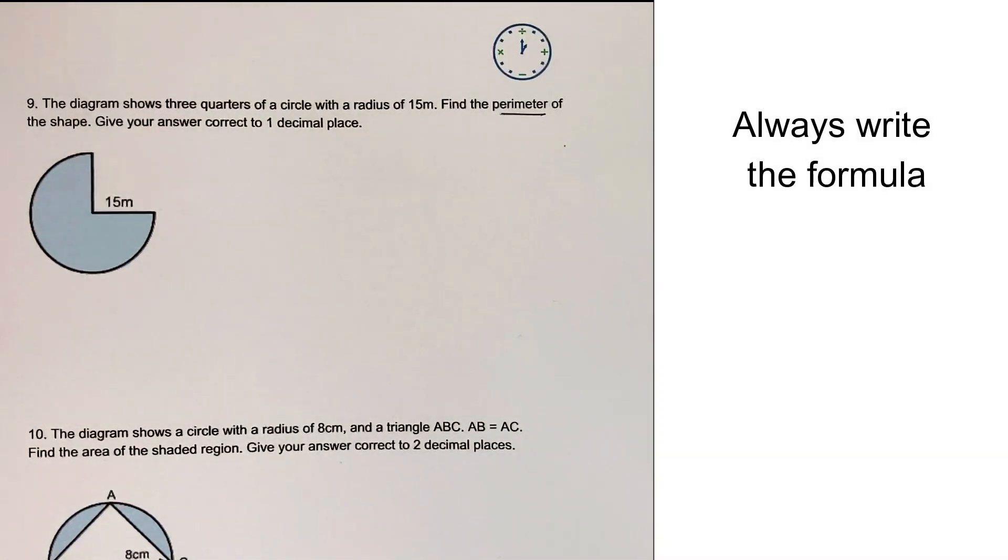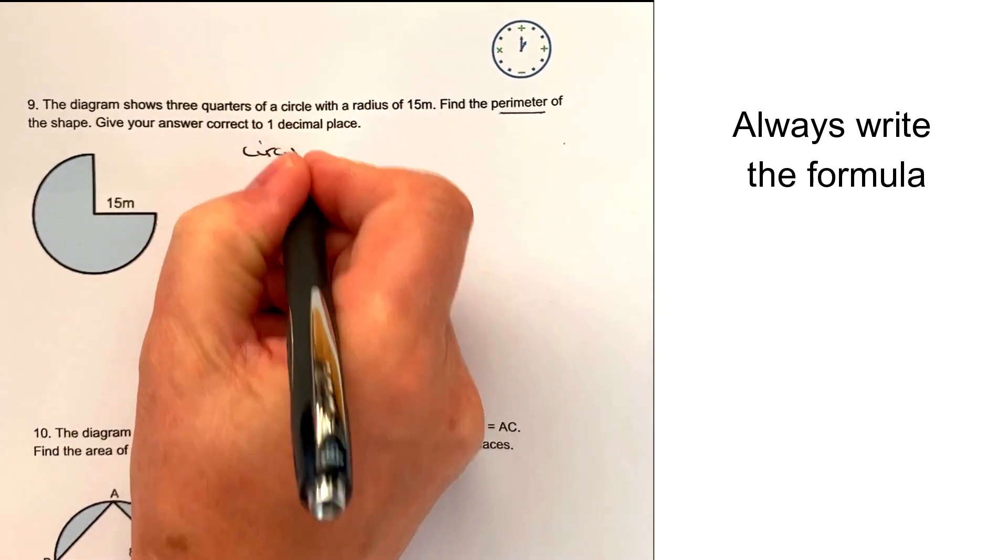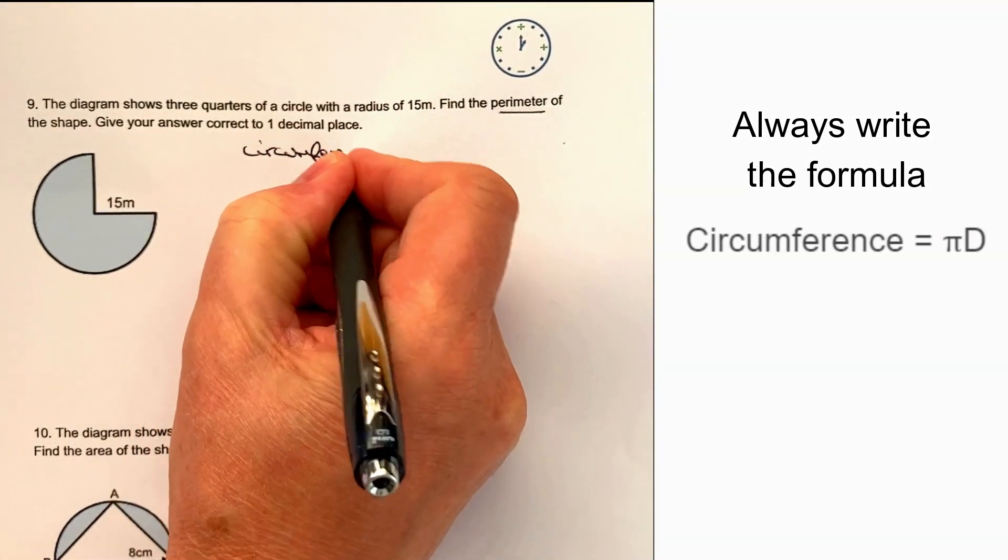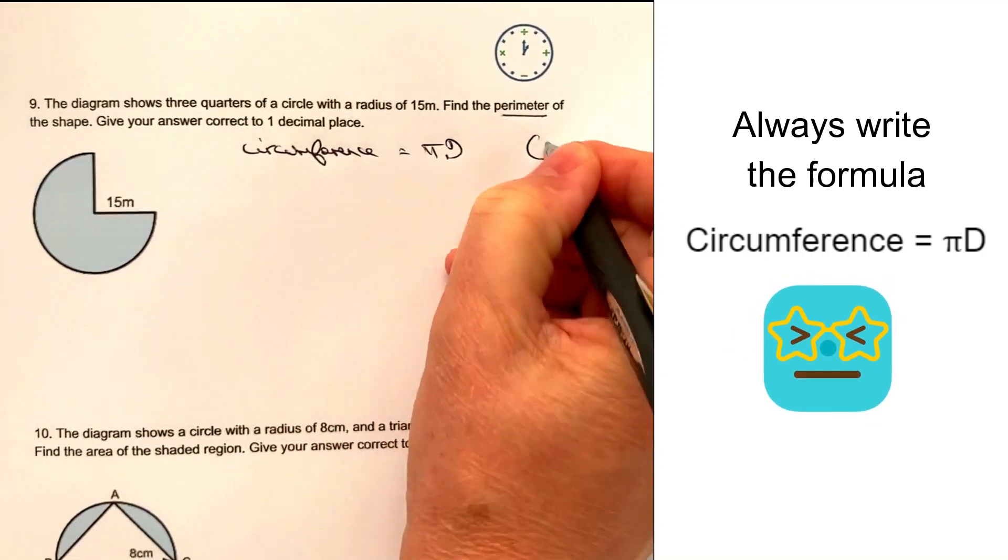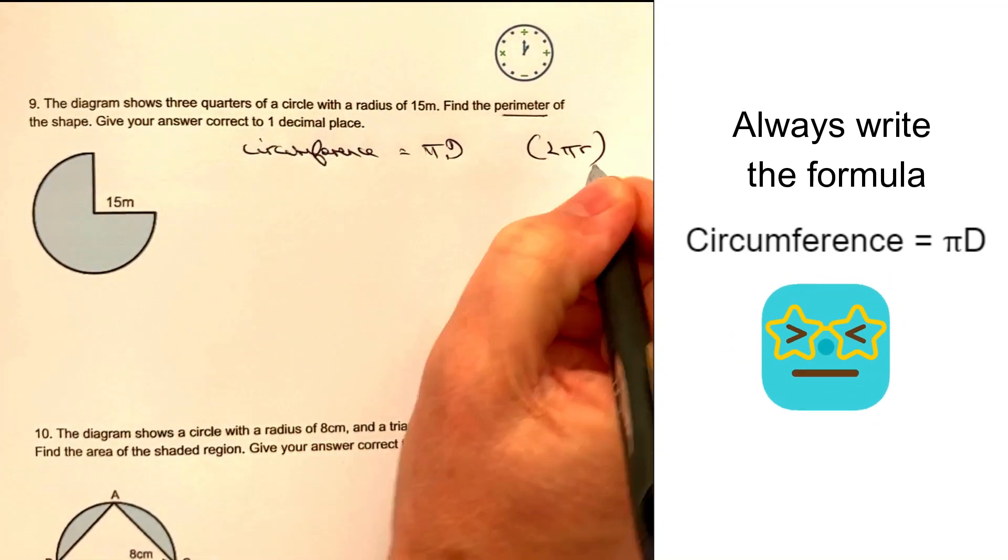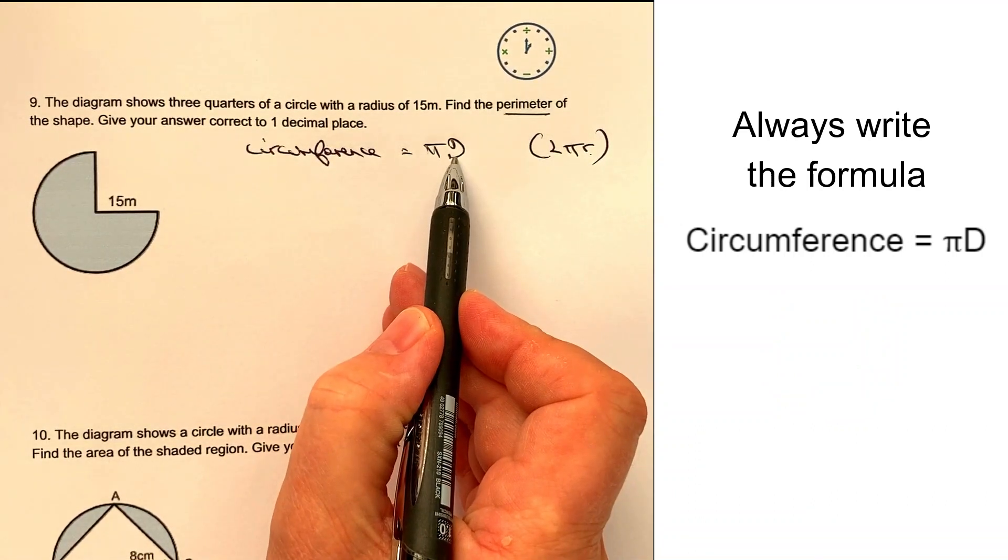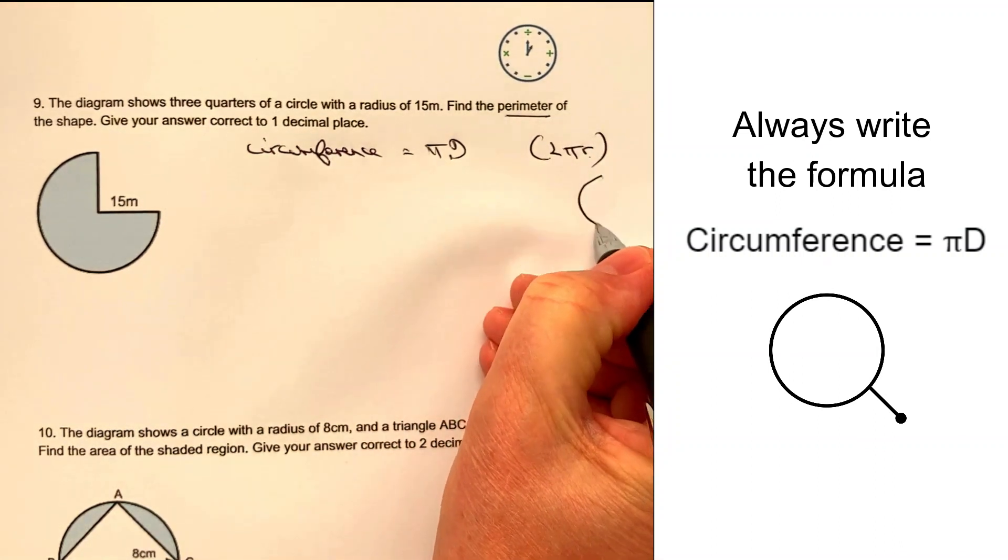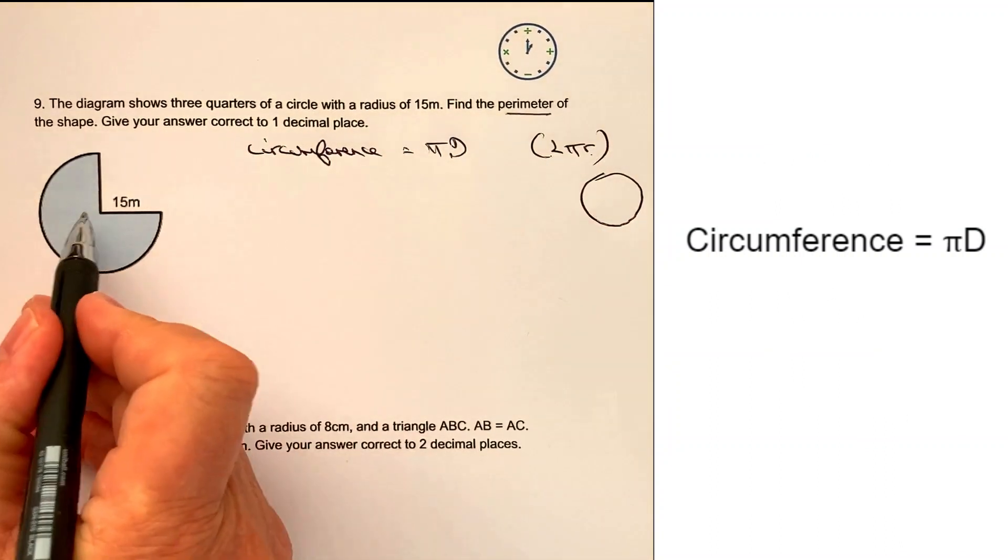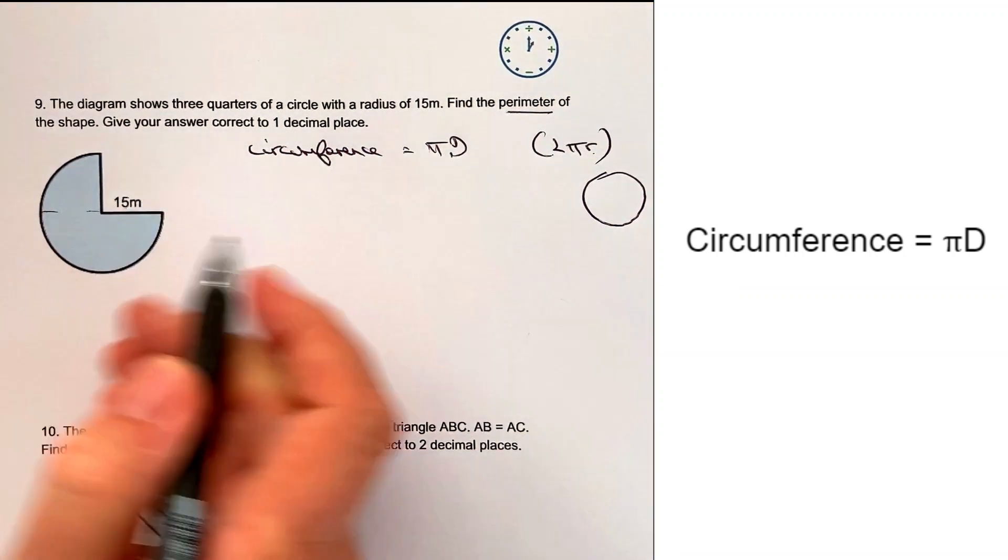So if it's a whole circle, we've got the circumference equals π d. Now, I am aware that some people will write 2π r. The reason that is, is because two times the radius is the diameter. So if we can imagine it's a complete circle, if we look at the diagram, it would have a diameter of 30 metres.